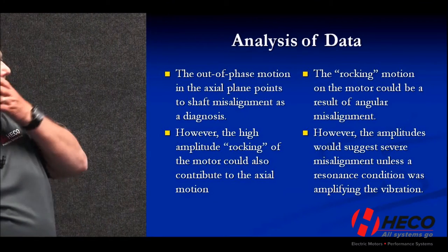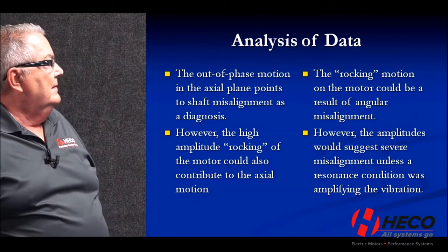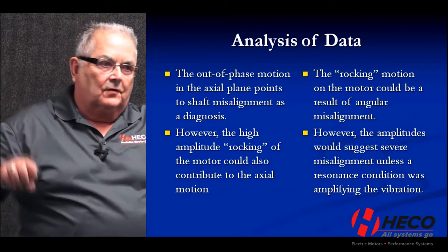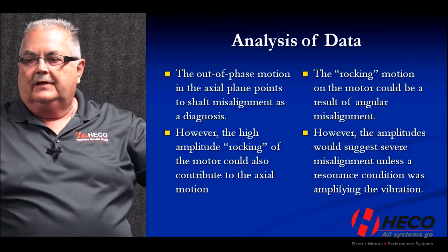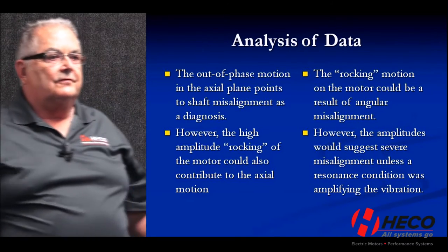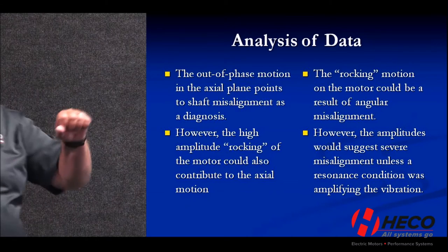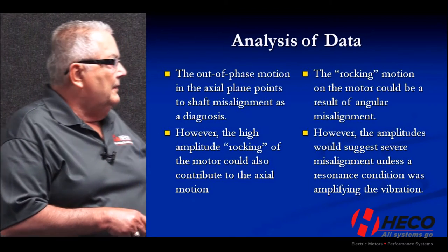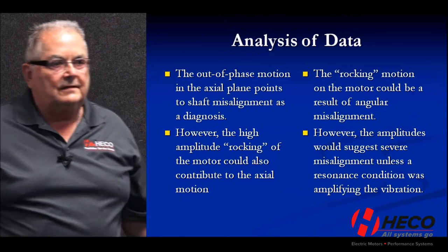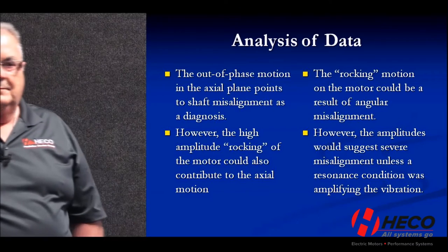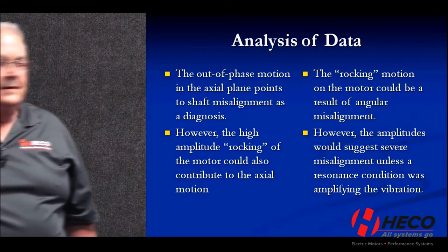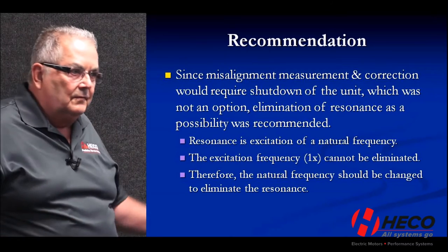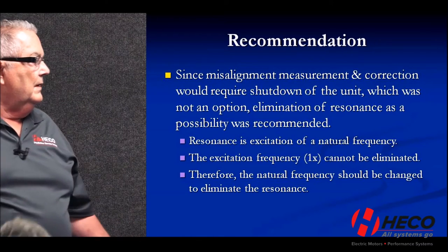Looking at this data, the motor appears to have a rocking motion in the vertical direction, which is where the high vibration is. If you have a rocking motion, that's going to give you some axial motion too — which might explain why both vertical and axial are high while horizontal is fine. So we said: either we have severe misalignment or resonance. We'd already checked the alignment, and checking it again would have required a shutdown they didn't want.